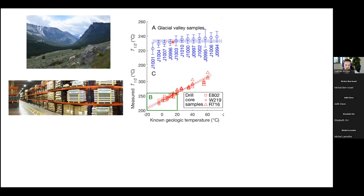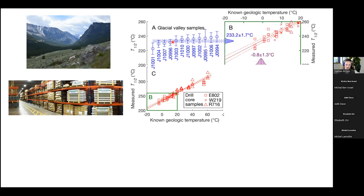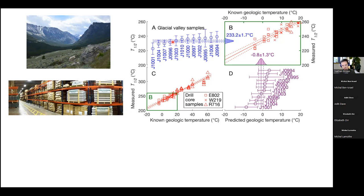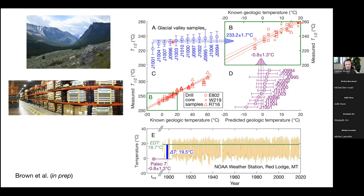And then what we're going to do is very simple. All we're going to do is take the measured T half values from these glacial valley samples, and we're going to project them onto this drill core trend. So what we're doing is we're saying we know the geologic temperature for these drill core samples. And let's ask these glacial valley samples, what's your temperature? So we measure the T half value, we project it on to this drill core trend. And what we get is a predicted mean geologic temperature of just under zero degrees C.